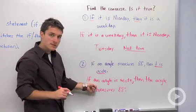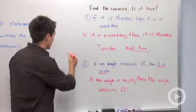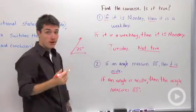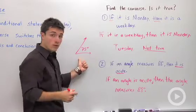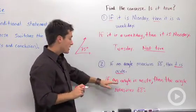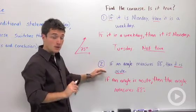So if we look at this statement, let's say I had an angle right here that measured 75 degrees. Well, it's an acute angle, but it's not equal to exactly 88 degrees. So the converse of this statement is not true as well.